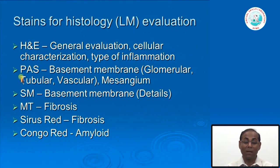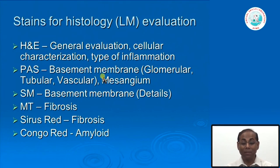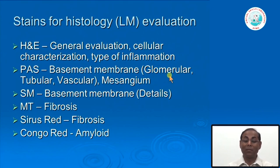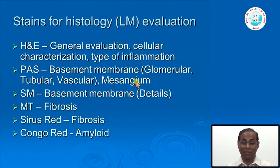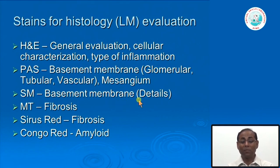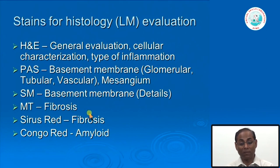The PAS stain (periodic acid-Schiff) is done to see the basement membrane very clearly, since H&E does not show the glomerular basement membrane as clearly as PAS does. PAS reveals basement membranes of glomeruli, tubules, and blood vessels, and also highlights the mesangial matrix. Silver methenamine stain gives details of collagen in the glomerular basement membrane. Sometimes Masson's trichrome is done to assess fibrosis, and Congo red or Sirius red stain is done to detect amyloid.